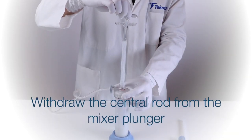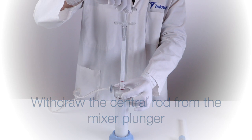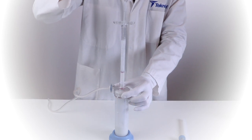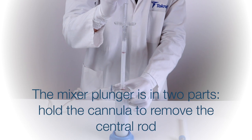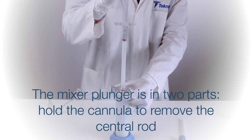Withdraw the central rod from the mixer plunger. The mixer plunger is in two parts; hold the cannula to remove the central rod.